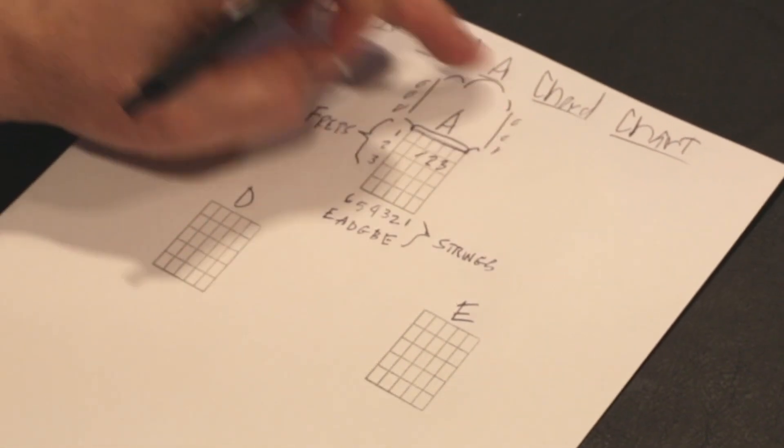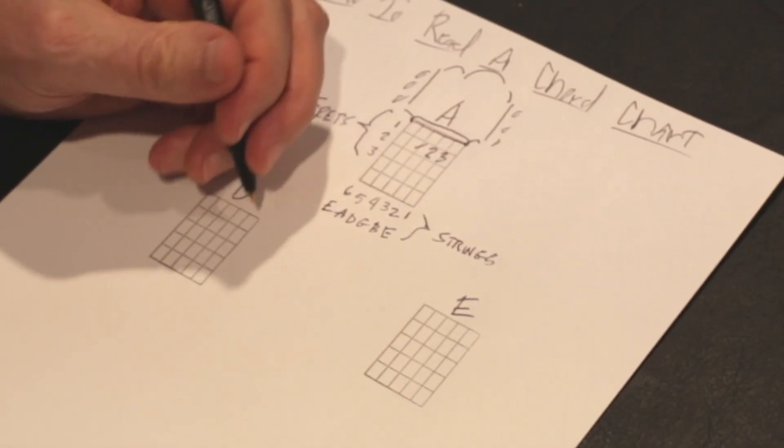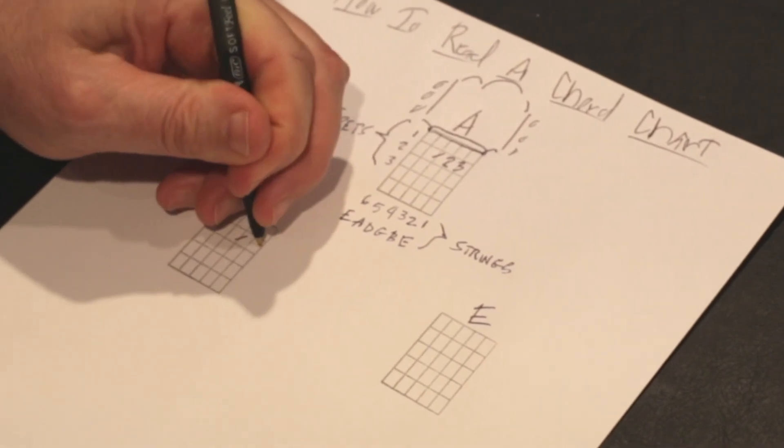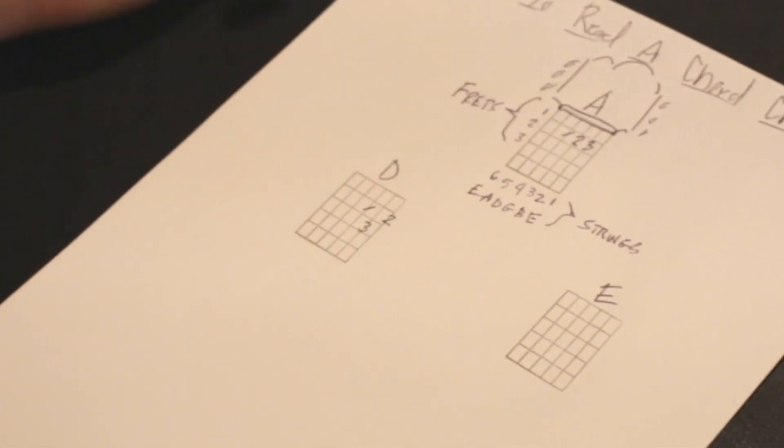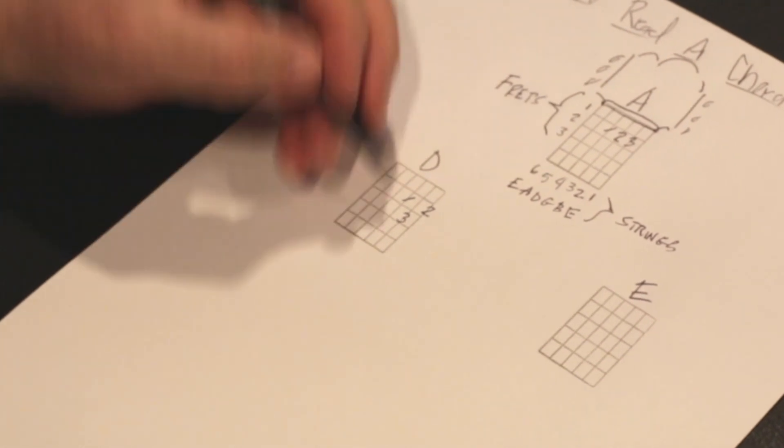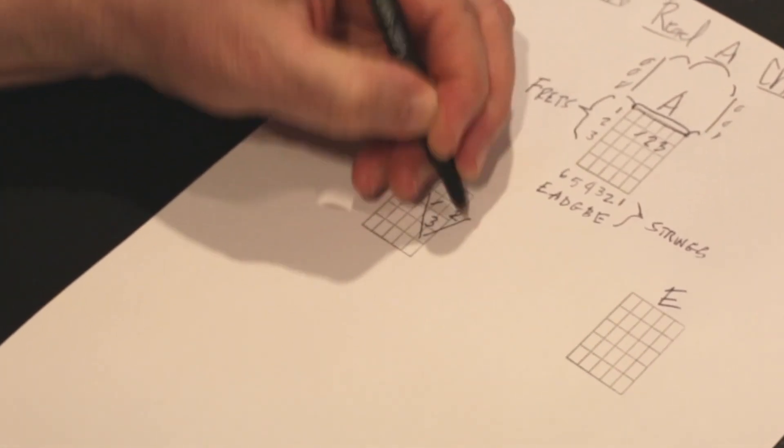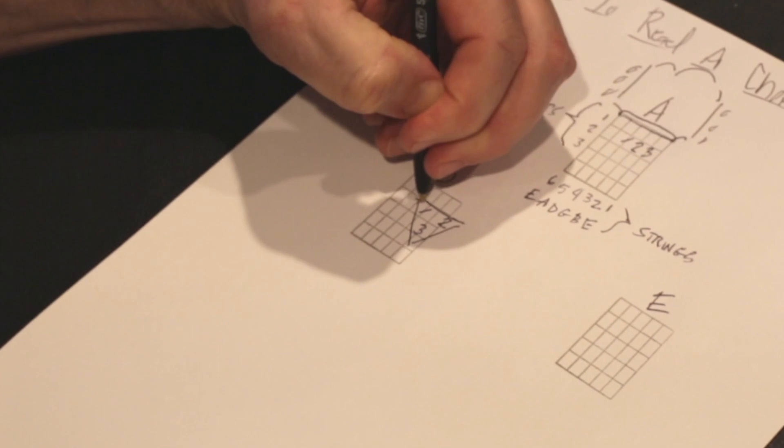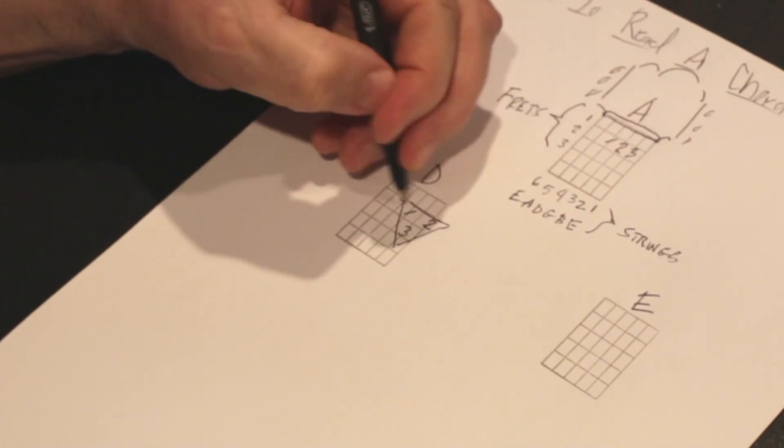The next one's D. You don't get the real pretty guitar and all that stuff on this. So D is one, two, and three. We talked about this being a triangle shaped chord. It's like this. What I mean by that, it was kind of a triangular shaped chord.